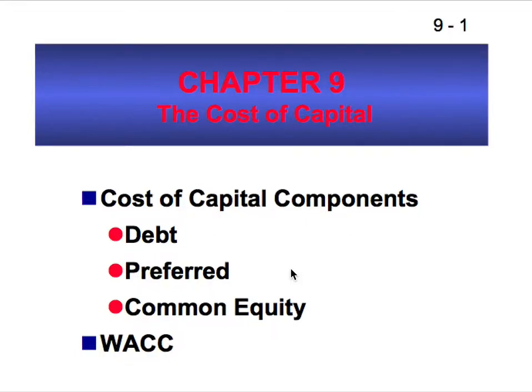This is a chapter on cost of capital. Capital basically has three components: debt, preferred stock, and common equity. And when the costs of these three components are combined, we have something called WACC — the weighted average cost of capital.